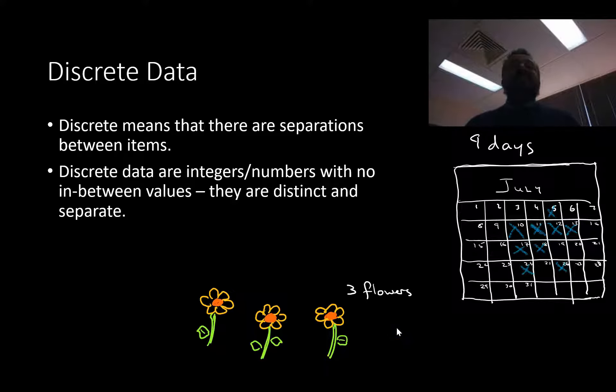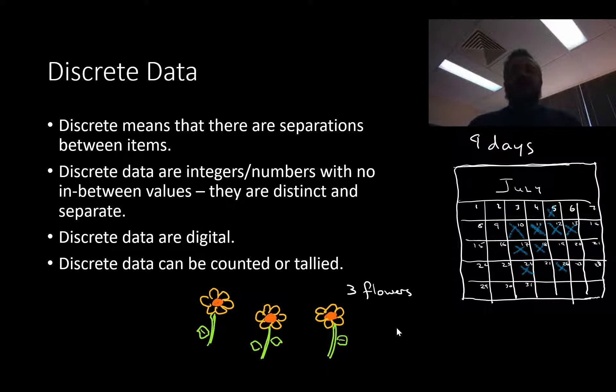So discrete data, it means that they're counting things, right? Like, so you're counting something. There's no, they're numbers, they're integers, there's no in-between. They're distinct and separate. And they're also digital. Digital is just a word that means on or off, like a digital clock. It is either the one second or the two seconds. It doesn't have to move in-between the two. And the really easy way to know if something is a discrete data is, can it be counted? Is it a count or a tally?